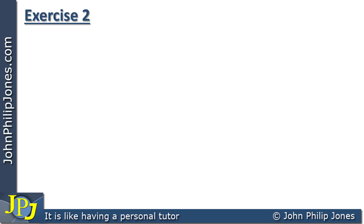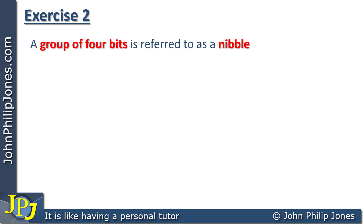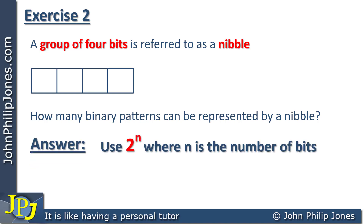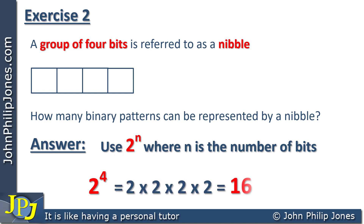Exercise two: we have a group of four bits, which we know is referred to as a nibble. We string together four flip-flops, allowing us to store four bits. The question is how many binary patterns can be represented by a nibble? Using two to the n, with n being the number of bits, we get two to the four. This equals two times two times two times two, which equals 16.